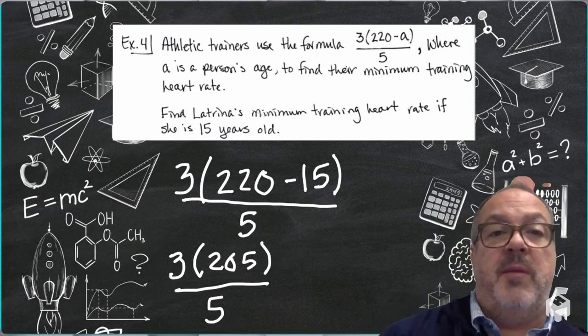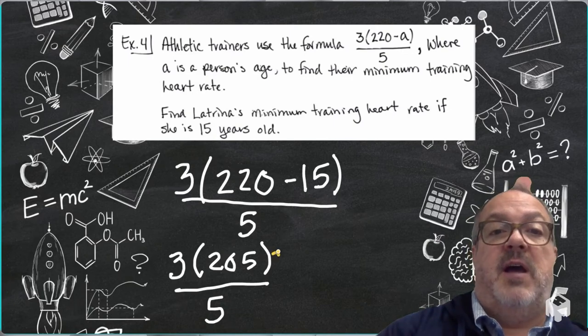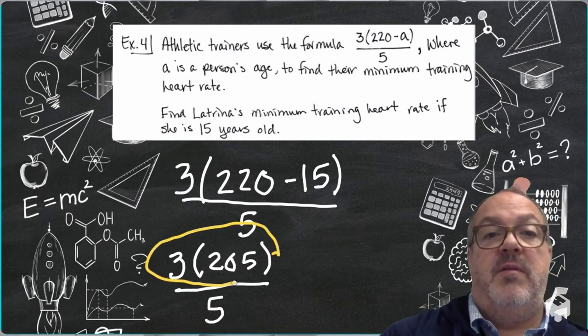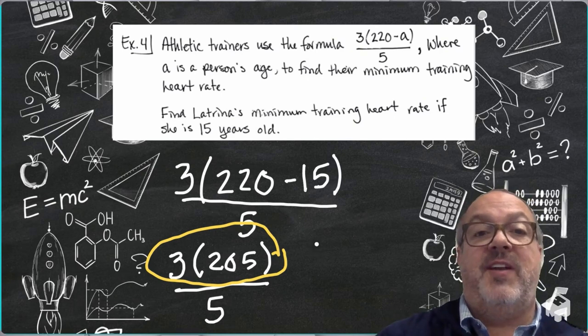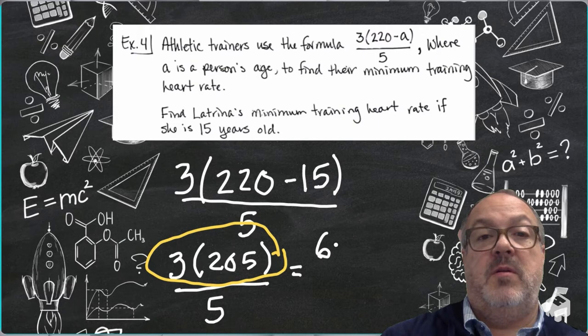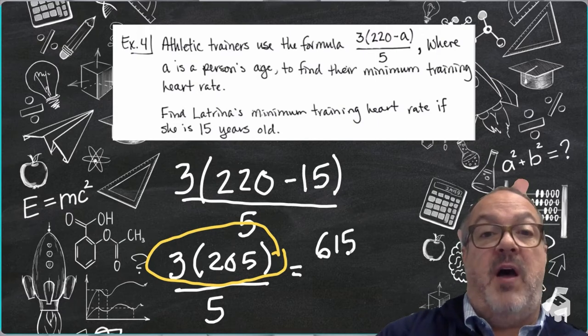So the first thing I'm going to do is I'm going to multiply 3 times 205. I'm going to divide 615 by 5.